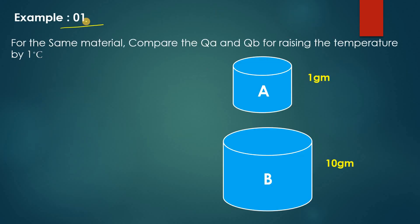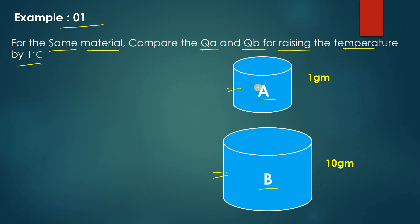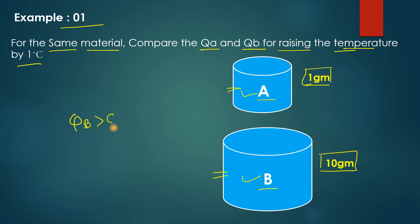Here is example one. We have two blocks, A and B. In block A there is water, and in block B there is also water — the same material. Compare QA and QB for raising the temperature by one degree Celsius. Block A has one gram of water and block B has ten grams of water. The QB will of course be higher as compared to QA.